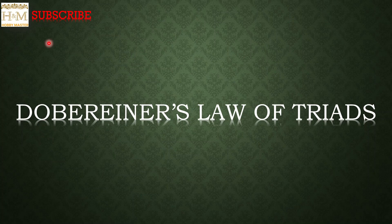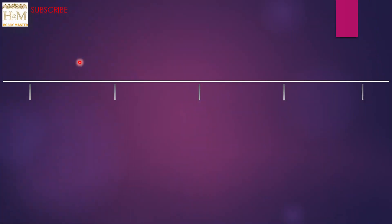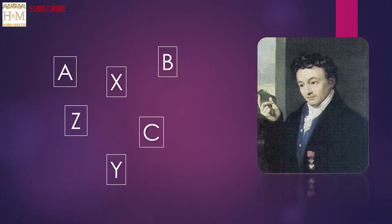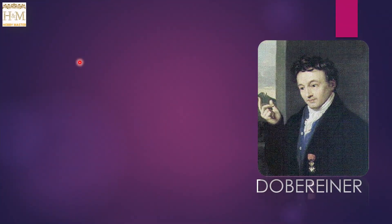Döbereiner's Law of Triads. It was around the beginning of the 19th century that a German chemist attempted the classification of then-known elements. It was none other than Johann Wolfgang Döbereiner who did so. He classified the elements known at that time in a particular manner, placing them into groups having three elements each.